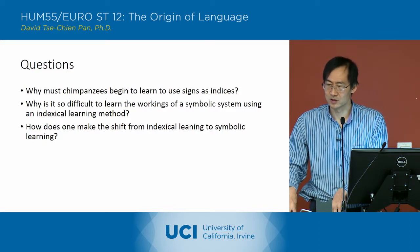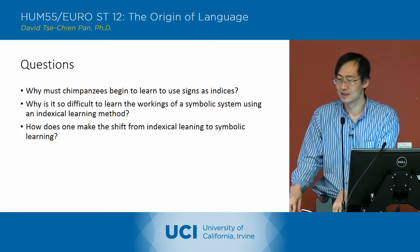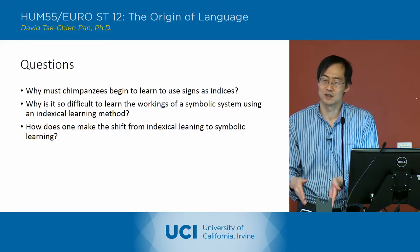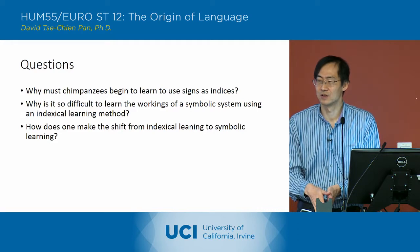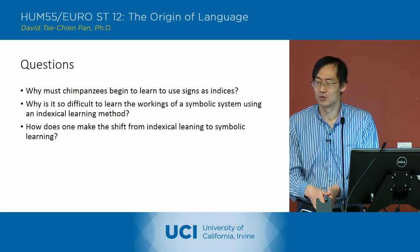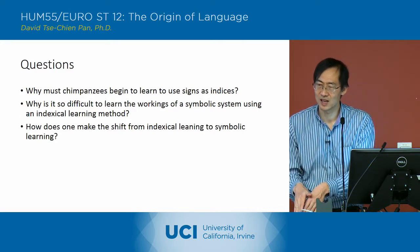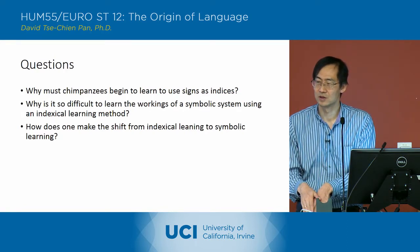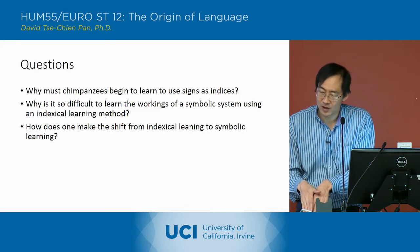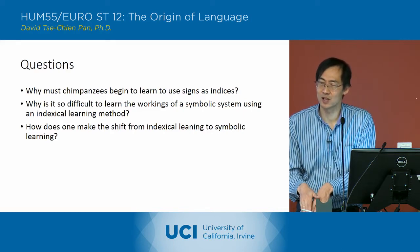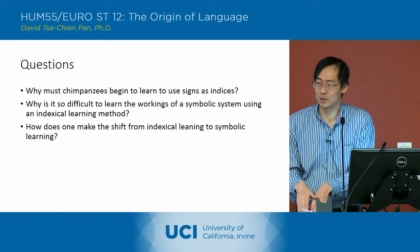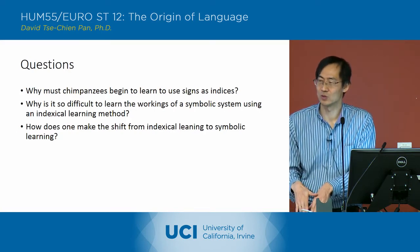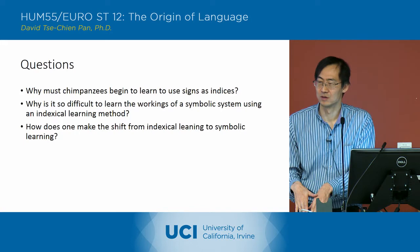Whereas the symbolic understanding of the sign doesn't depend upon always seeing the sign and the object at the same time. Rather, it depends upon understanding how that sign relates to other signs. And then by understanding the relationship of the sign to the other signs, you can extrapolate — you can predict what the object relation will be.